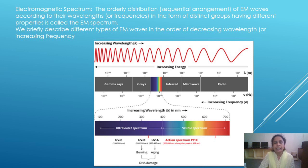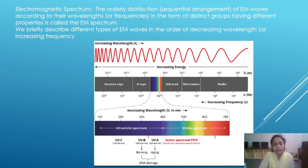The electromagnetic spectrum consists of gamma rays, X-rays, visible rays, infrared, microwaves, and radio waves. The diagram shows the different rays arranged by increasing wavelength (lambda in meters) and increasing frequency (nu) of electromagnetic waves.